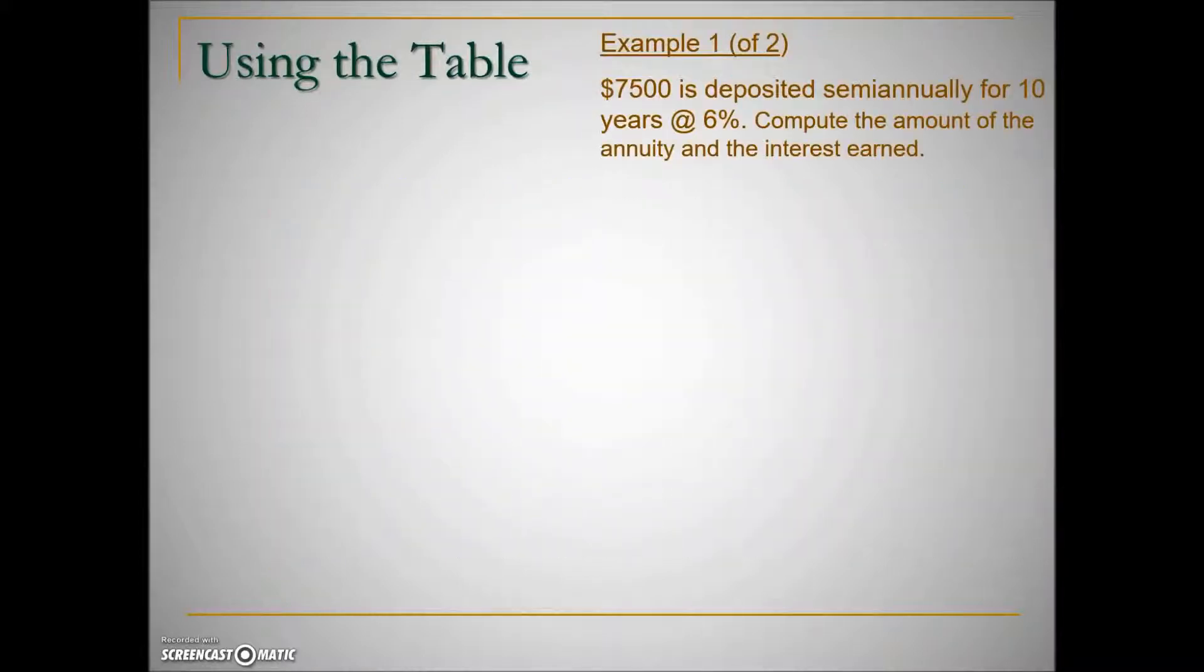So let's look at this first example. $7,500 is deposited semi-annually for 10 years at 6%. Compute the amount of the annuity and the interest earned. In other words, what will this grow into?